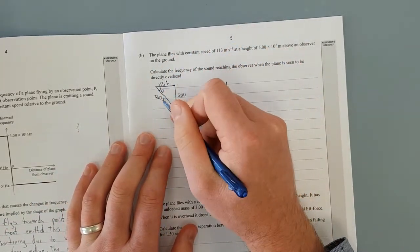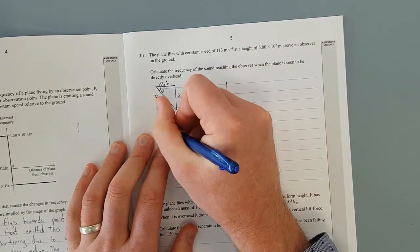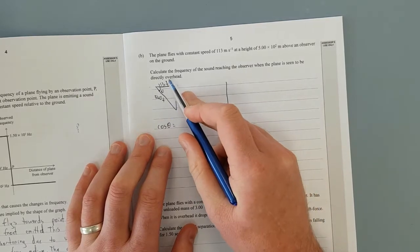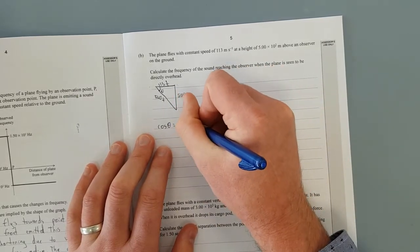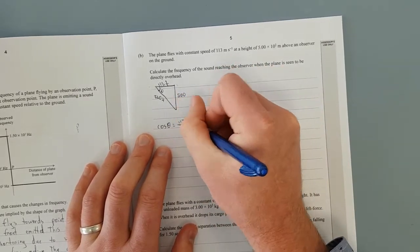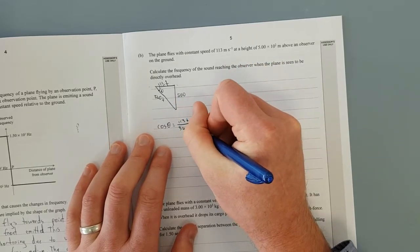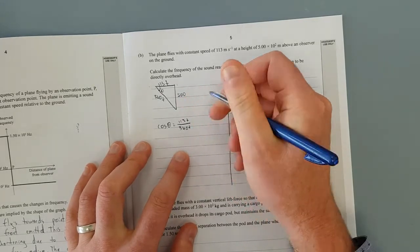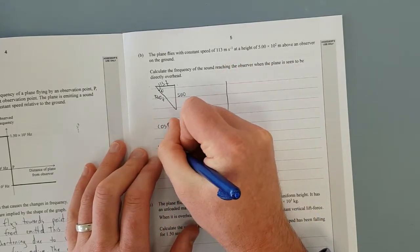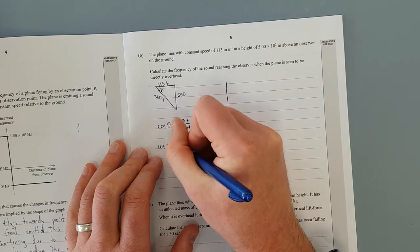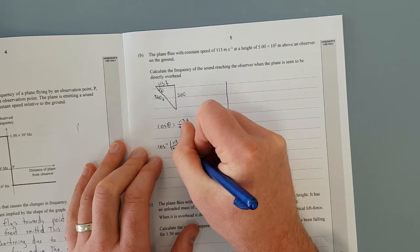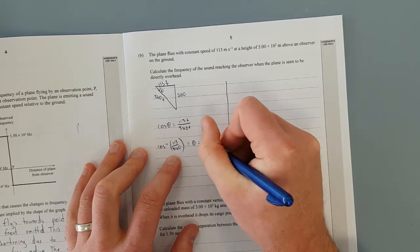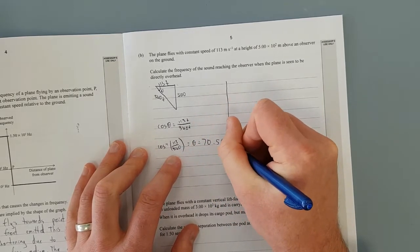We have the hypotenuse and the adjacent, we're going to go cos theta is equal to the opposite which is 113 times time over the adjacent which is 340 times time. Well look at that, time cancels out how neat is that. And then it's going to give us cos inverse 113 over 340 equals theta which is going to be equal to 70.59 degrees.